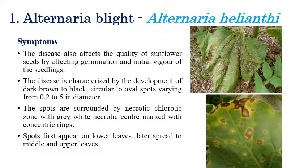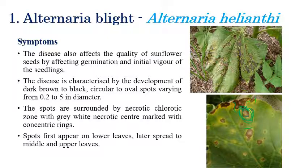The first disease is Alternaria blight, caused by Alternaria helianthi. On the right side we can see dark brown or black color oval spots. The size ranges from 0.225 mm in diameter. These oval or circular brown spots are surrounded by a necrotic or chlorotic zone. Concentric rings can be clearly observed, which is the characteristic and diagnostic feature of Alternaria blight.